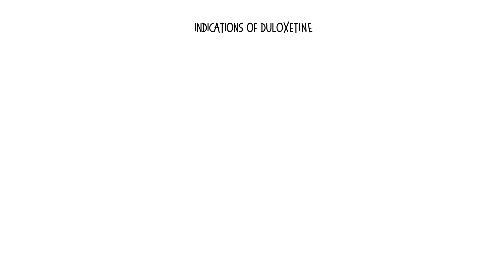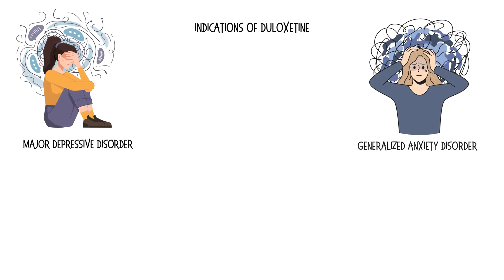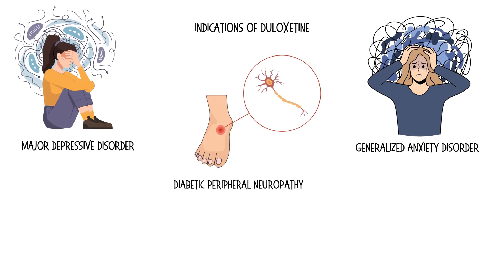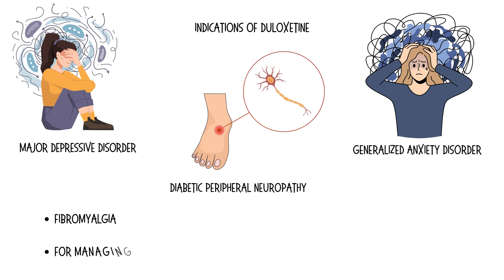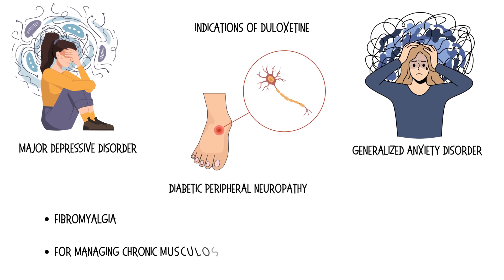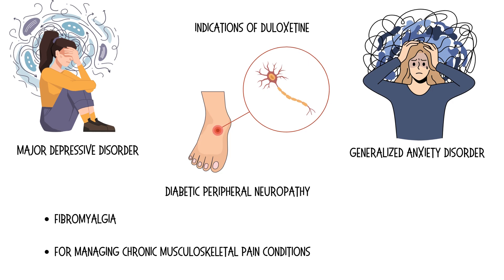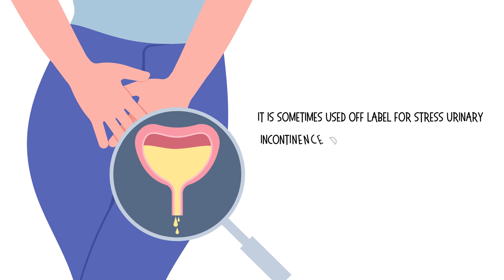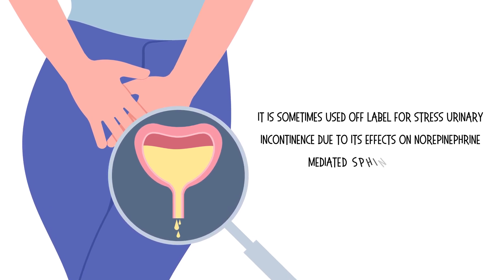Indications of diloxetine include major depressive disorder, generalized anxiety disorder, diabetic peripheral neuropathy, fibromyalgia, and managing chronic musculoskeletal pain conditions such as osteoarthritis and chronic lower back pain. It is sometimes used off-label for stress urinary incontinence due to its effects on norepinephrine-mediated sphincter control.